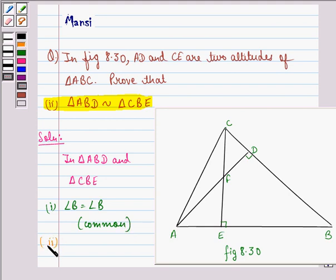Second, we see that in triangle ABD and triangle CBE, angle ADB is equal to angle CEB because both AD and CE are perpendiculars. So each of them is equal to 90 degrees.